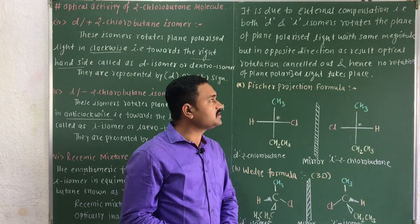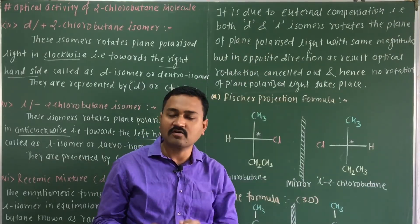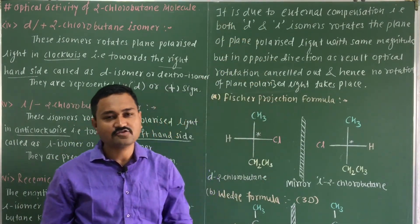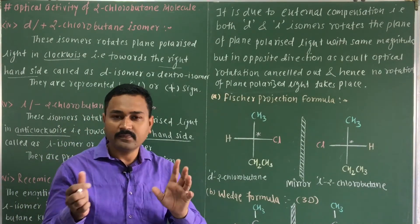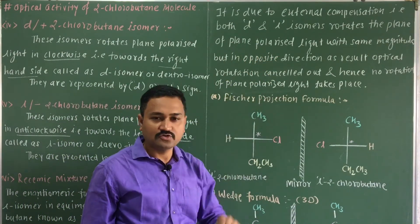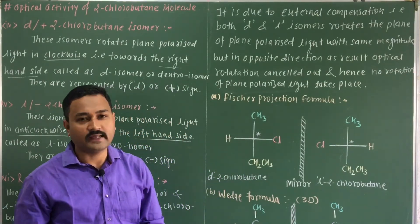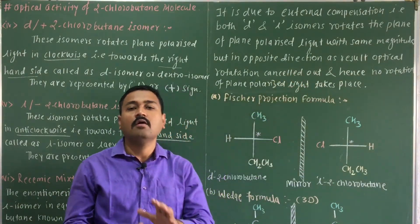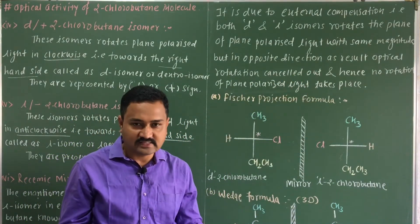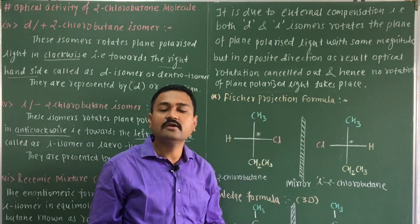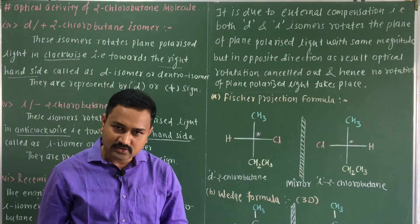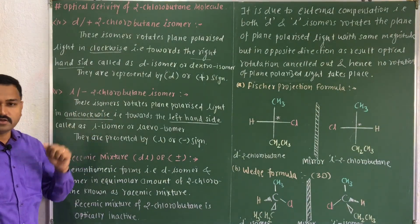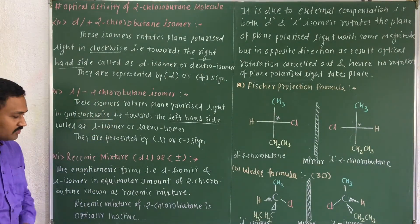The racemic mixture is optically inactive due to external compensation. Both the D and L isomers rotate the plane of plane polarized light with the same magnitude but in opposite directions. As a result, the optical rotations cancel out, and hence the racemic mixture is optically inactive.